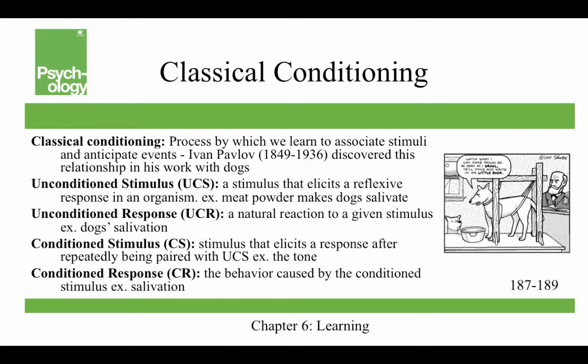Classical conditioning has a couple of different components. We have an unconditioned stimulus, or UCS — a stimulus that elicits a reflexive response in an organism. For example, meat powder makes dogs salivate; they don't have to be taught to like meat powder — unconditioned means unlearned. That leads to an unconditioned response, which is a natural reaction to a given stimulus, which is the salivation. So UCS causes a UCR.